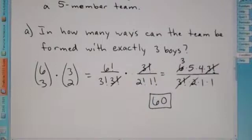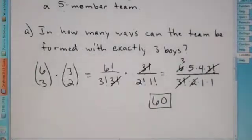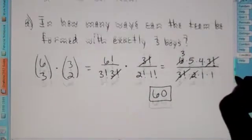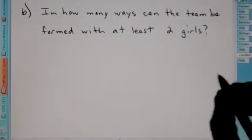So this would be our answer. How many ways can a team be formed with exactly three boys? There's sixty ways to get three boys and two girls to make a five-member team. Alright, let's do our last problem here. Last problem.